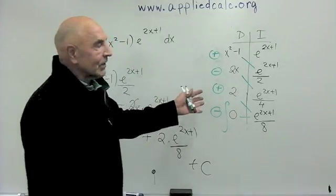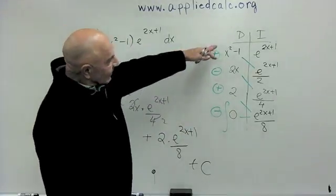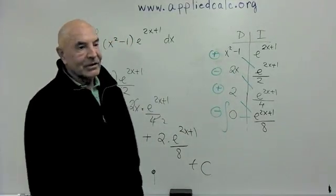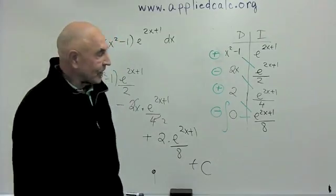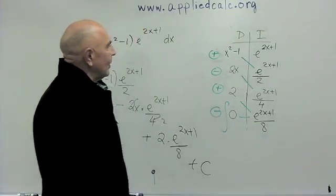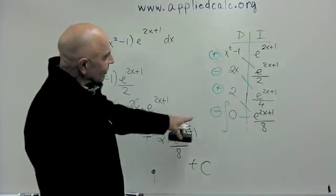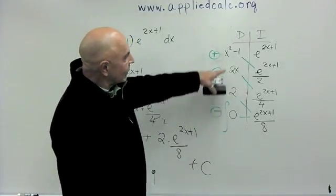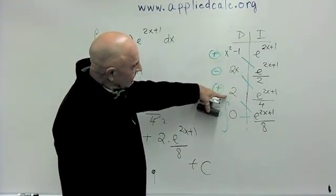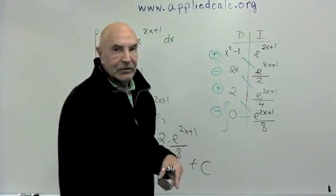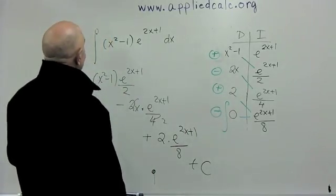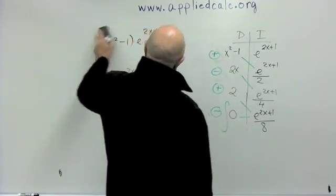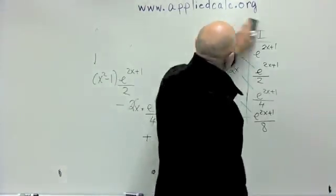No matter how many steps you have to do, this method of integration by parts makes it a lot easier. Now let me show you what happens when you don't get a zero, because you're not always fortunate enough to end up with a zero after repeatedly differentiating something. So what I'm going to try is something involving a natural logarithm.